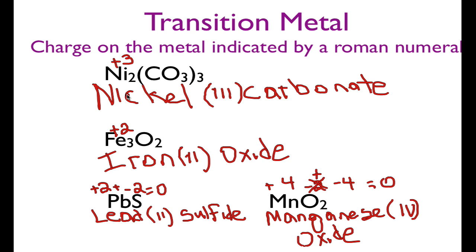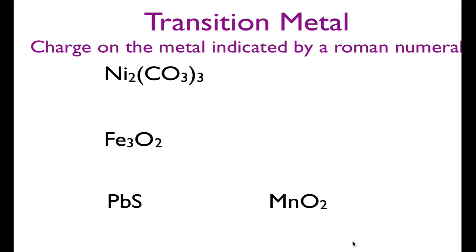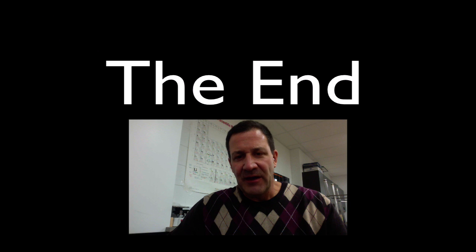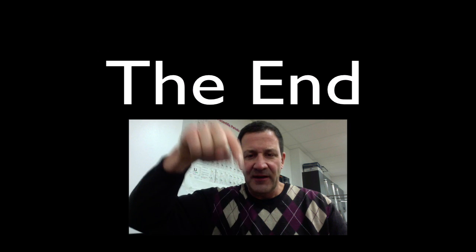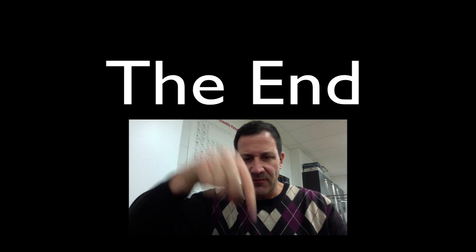So that covers all three kinds. It's just: write down the metal, then put down the anion — whether it's a polyatomic with its full name, or a non-metal with the -ide ending. I hope that was helpful. If you have any comments, please leave them in the comment section below.